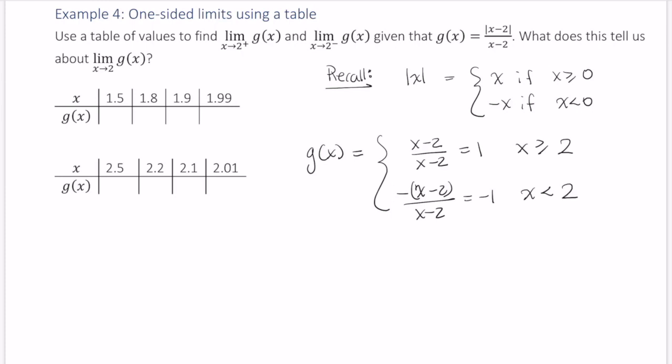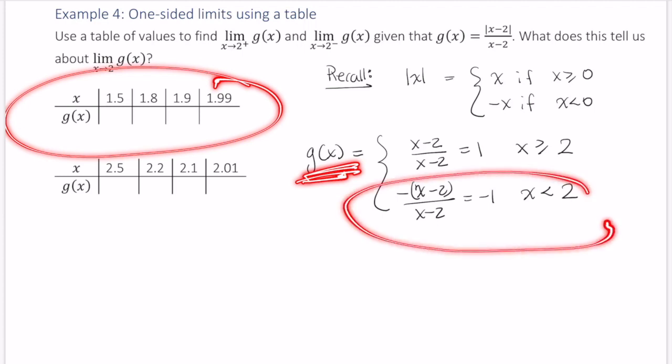So that makes this table really easy to fill out. Let's see, what do we have here? This whole table on the top, all of these values are less than 2, and according to our rewriting of g, if the value is less than 2, we end up with just negative 1.